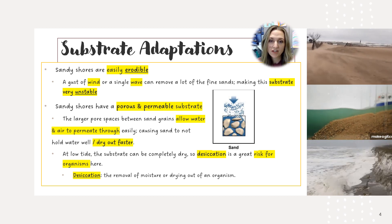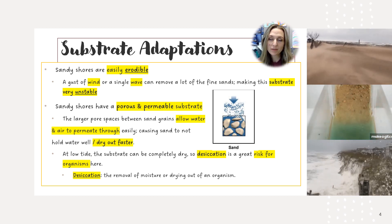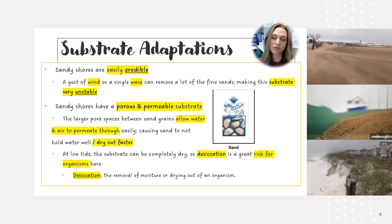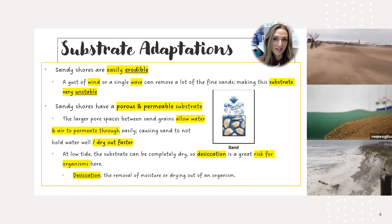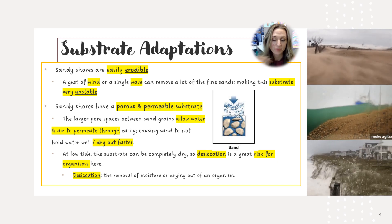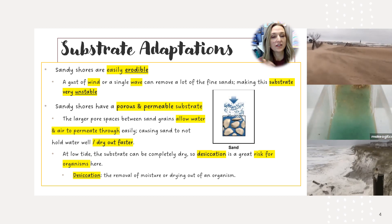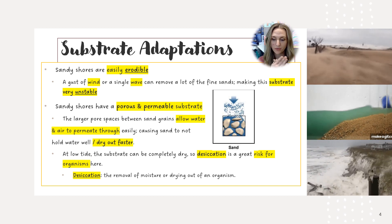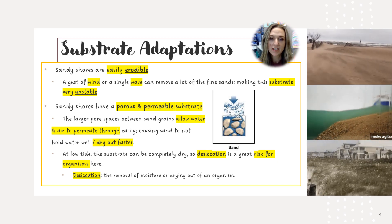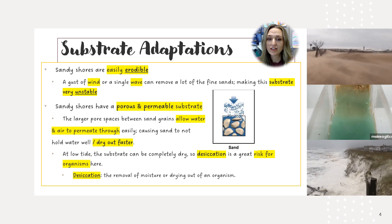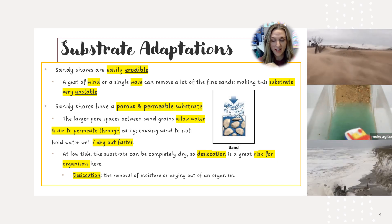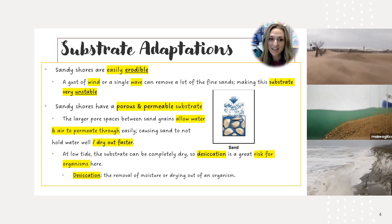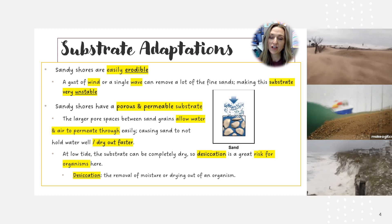One of the most important things to know about the sandy shores is that organisms living there need a lot of adaptations to survive in that kind of substrate. The substrate is very easily erodible, meaning sediment can move from one place to another. Gusts of wind or a single wave can remove a lot of sand, so if you're an organism trying to attach to the sand, you cannot — making it an extremely unstable substrate.